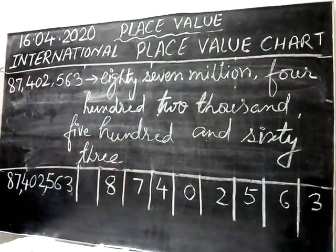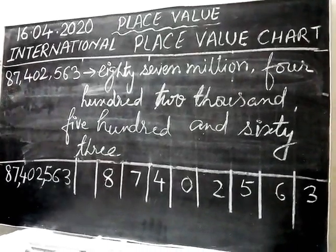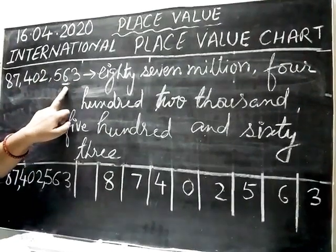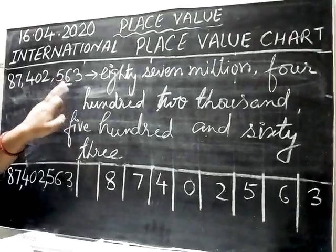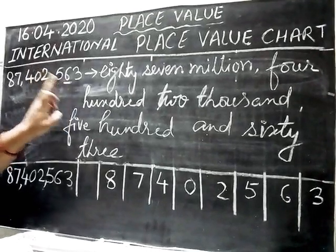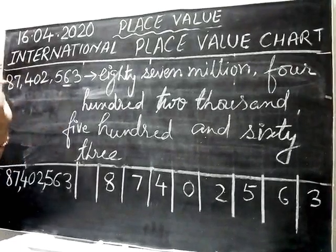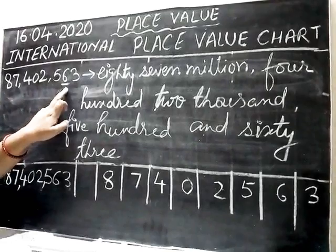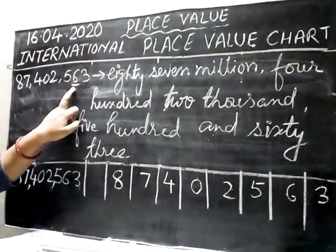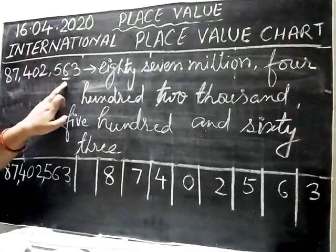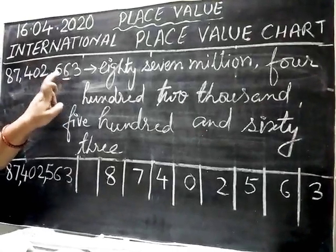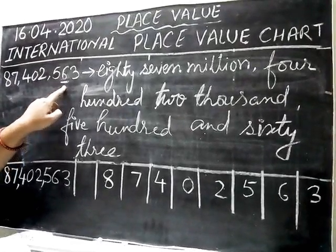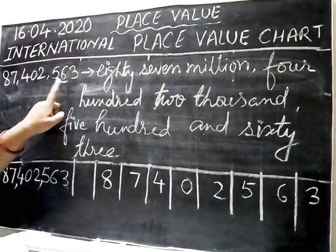So a question can be asked: mark the period of the underlined digit. Suppose digit 6 is underlined — its period is ones. Then: write the place of the underlined digit — the place of 6 is tens. And write the place value of 6 — its place value is 60. So: period is ones, place is tens, place value is 60.